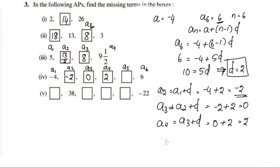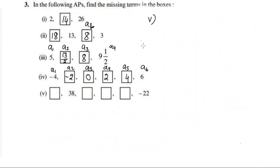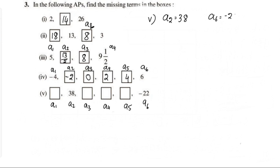With A1 = −4 and D = 2: A2 = −4 + 2 = −2, A3 = −4 + 2×2 = 0, A4 = 2, A5 = 4. Now for the next question, A2 = 38 and A6 = −22.